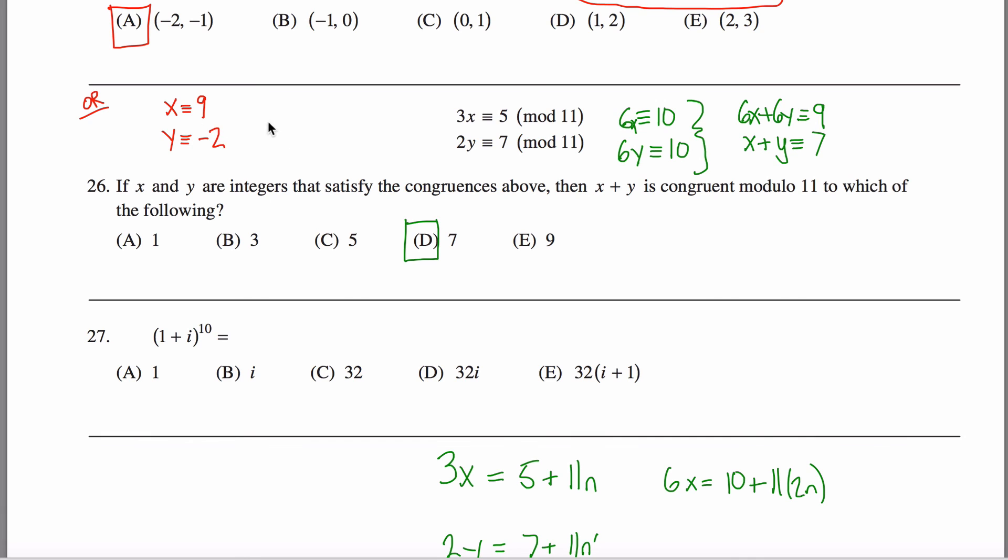And now if I add up x plus y, I get that's equivalent to 7, because 9 plus negative 2 or 9 plus 9, which would be 18, is equivalent to 7 mod 11. So either way, you get the same answer. I thought to do it this way first, but in hindsight, it might have been easier to do this problem this way over here.